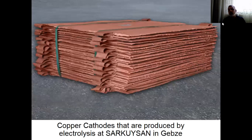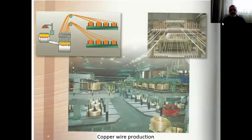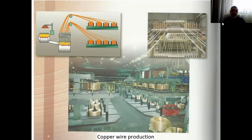Here are the copper cathodes produced by electrolysis at Sarkuysan in Gebze. From these coppers, copper wire production — as you see from the picture — copper wire film machines produce the wire, tin wires, and other things by this method. These wires are suitable for electrical and electronics applications because they contain 99.99% copper with the help of electrolysis. Otherwise it wouldn't be possible — the electrical resistance would be high, and the electrical current capacity decreases if you do not remove impurities from copper.